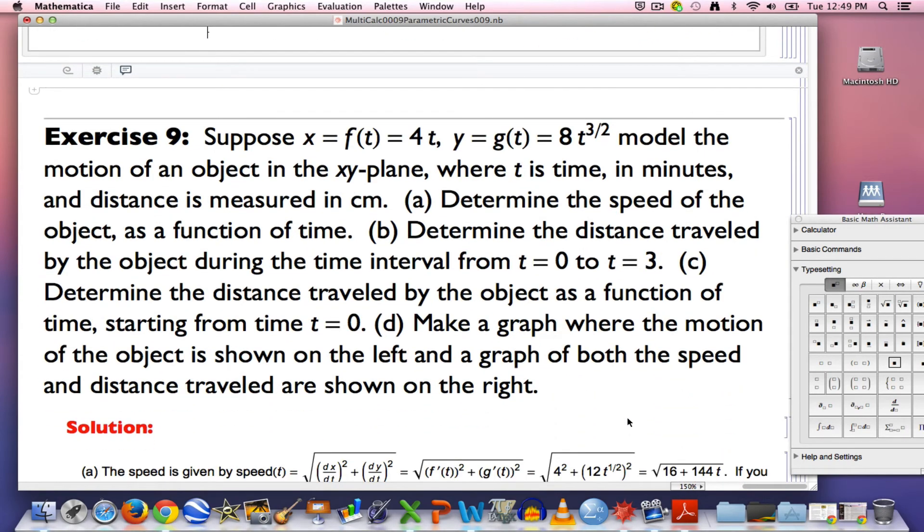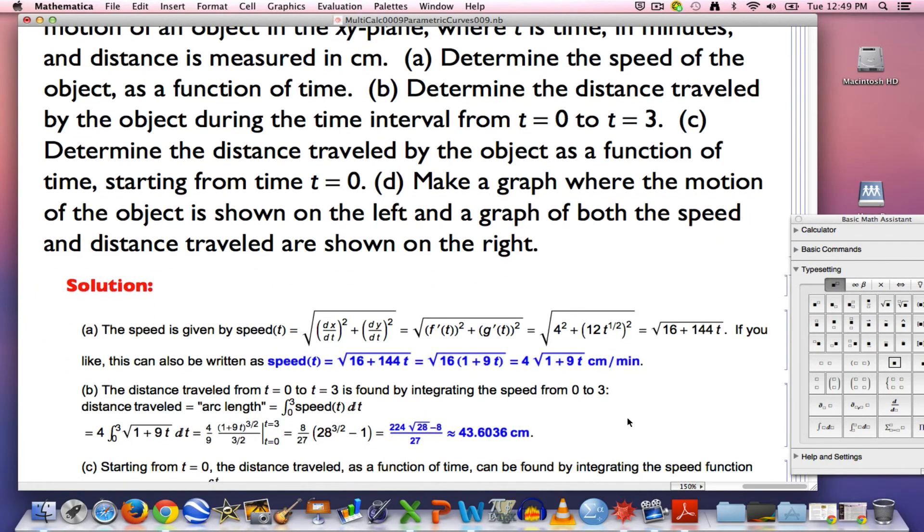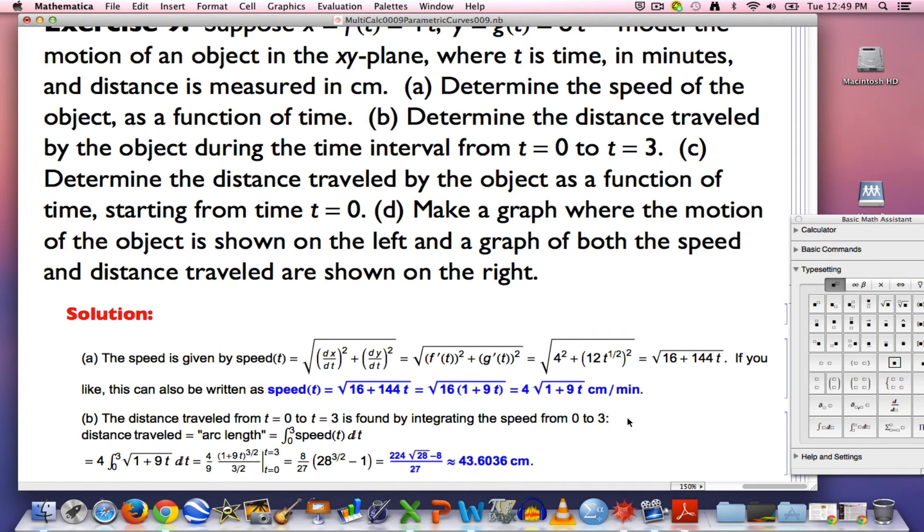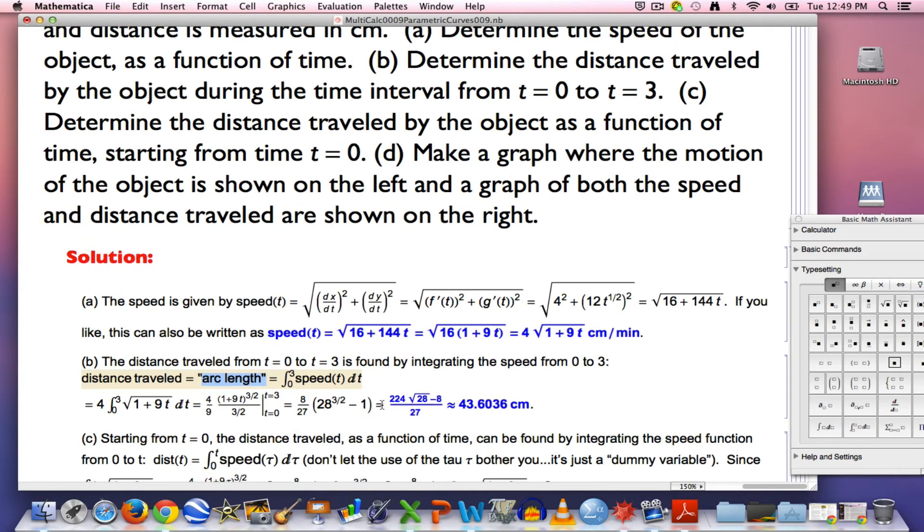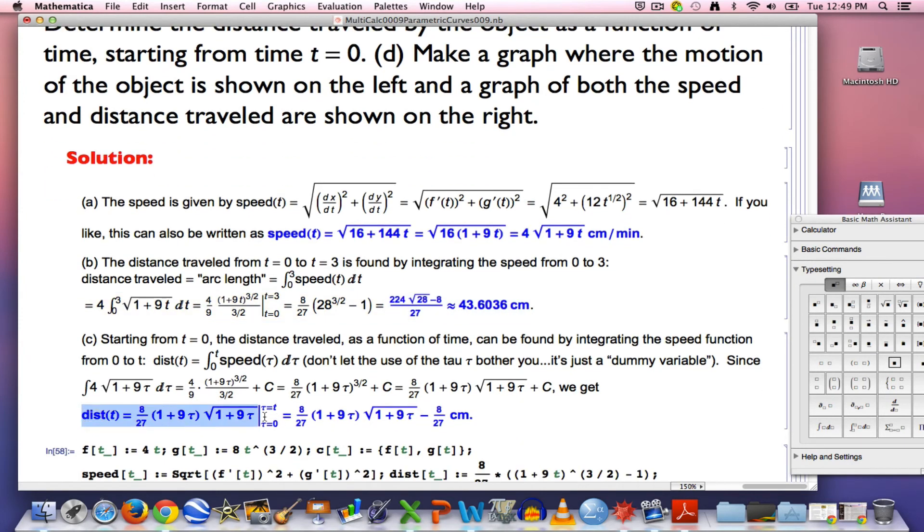All right, here's your exercise. Take a moment to pause the video and try to solve this. And now we'll go down to my solution. In this exercise, the speed as a formula, as a function of t is given by this expression, this equation here. The distance traveled, also called arc length by the way, is found by doing the integral from 0 to 3. And you should get that for the distance traveled. The distance traveled as a function of time is given by this expression.